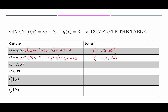For g − f, the functions are switched, so g goes first: (3 − x) − (5x − 7). Distributing the subtraction sign gives −x − 5x = −6x, and 3 + 7 = 10, yielding −6x + 10. As expected, this is the exact opposite of f − g. It's still a linear function with no domain restrictions.